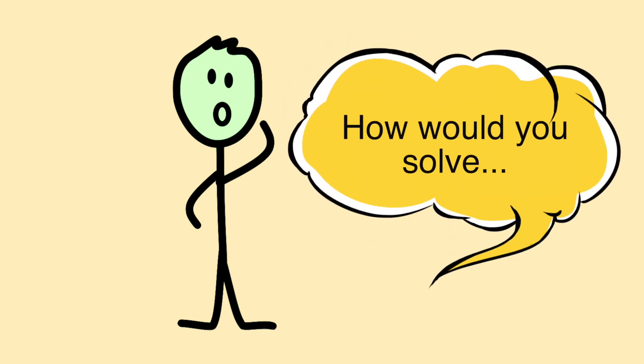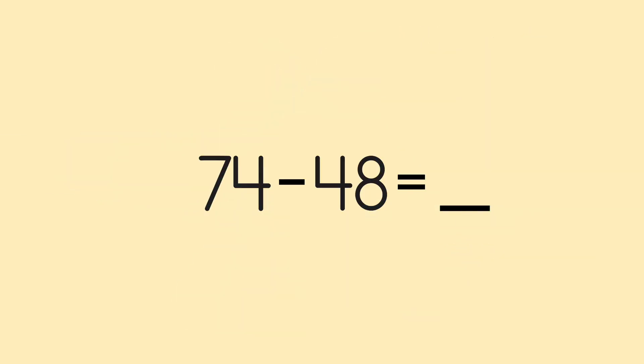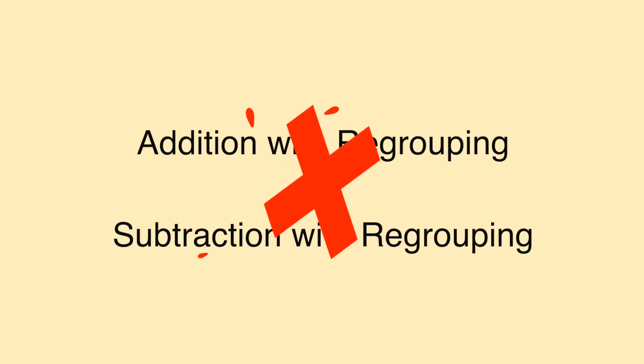Kelvin, his teacher asked, how would you solve 74 minus 48? Now Kelvin's class hadn't covered addition or subtraction with regrouping and they had just started subtracting two-digit numbers, so he was a little stumped.